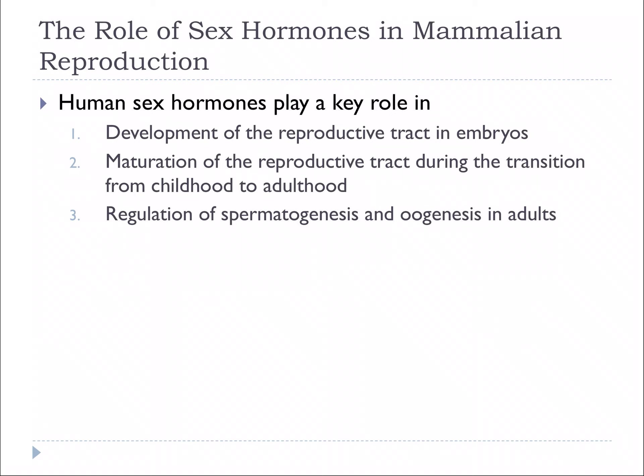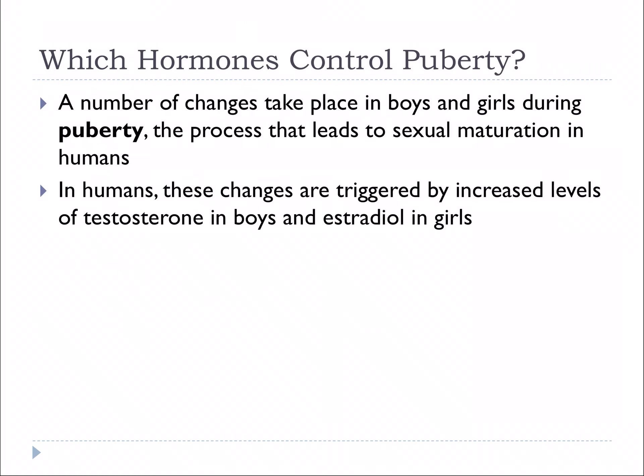Human sex hormones play a key role in the development of the reproductive tract, maturation of the reproductive tract, and the regulation of spermatogenesis and oogenesis — controlled by testosterone, estradiol, and various other hormones. At puberty, that's when all of these hormones really kick in, leading to sexual maturation — increased levels of testosterone in young men and estradiol in young women.